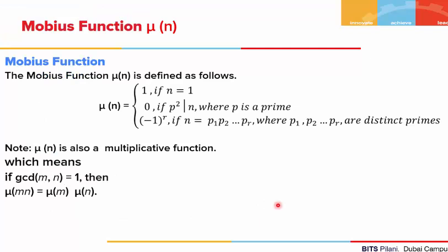Let's define the Mobius function mu(n). The Mobius function is defined as having only three values: 1, 0, or −1. Mu(n) = 1 if and only if n = 1. Mu(n) = 0 if and only if n is divisible by the square of some prime. And mu(n) = (−1)^r if n is a product of r distinct primes. Mu is also a multiplicative function: if gcd(m, n) = 1, then mu(mn) = mu(m) × mu(n).